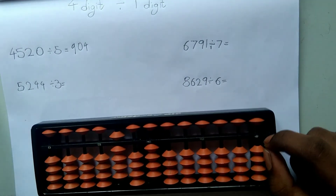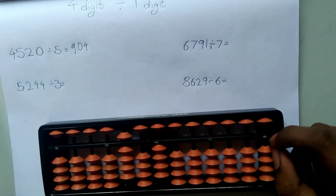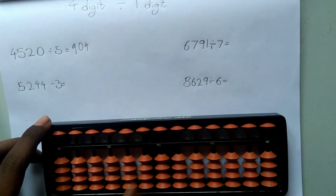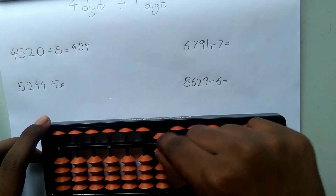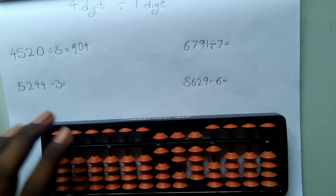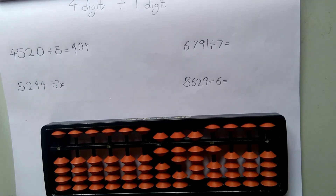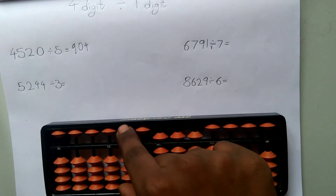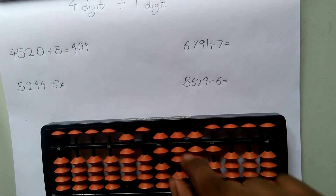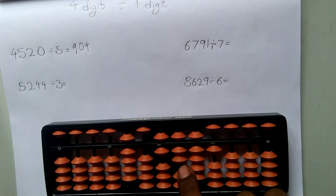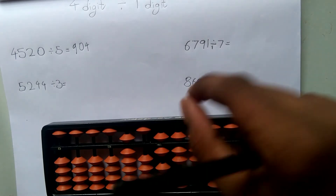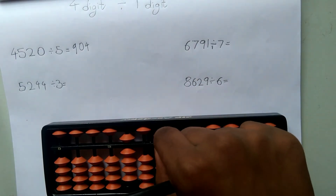Now let's go to the next problem: 6791 divided by 7. First we represent 6791. Let's check the first digit: 6. It is less than 7, so we cannot use it. Let's include the next digit — then it becomes 67. 67 is greater than 7, so we can use it. 7 nines are 63. I am representing on the 100s rod because we included the 100s rod in the question set, and it is 63, so we subtract 63.